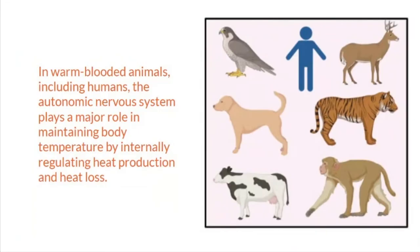In warm-blooded animals, including humans, the autonomic nervous system plays a major role in maintaining body temperature by internally regulating heat production and heat loss. When we feel hot, our body does its role in regulating temperature — from our thermoreceptors, a stimulus is sent indicating the environment is hot, and the brain signals the autonomic nervous system, causing the body to produce sweat in order to regulate temperature.